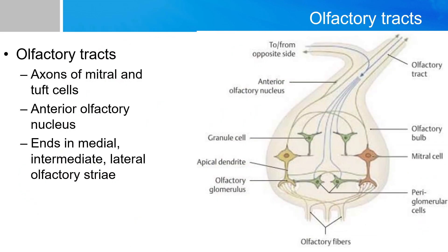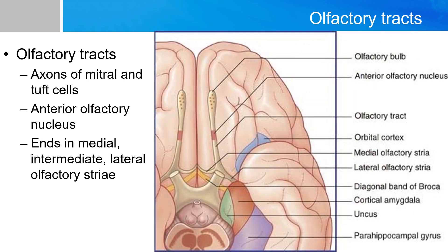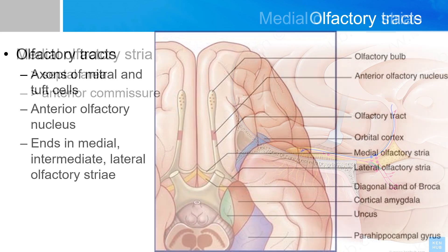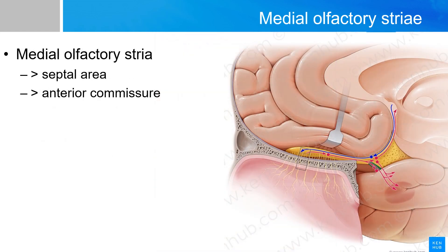After the mitral and tuft cells synapse in the olfactory bulb, their axons will leave via the olfactory tracts and end in the olfactory trigone. You will also encounter the anterior olfactory nucleus along the way. At the end of the olfactory tract, you meet a structure called the olfactory trigone, and at this point the olfactory tract will split into a medial olfactory striae and a lateral olfactory striae.